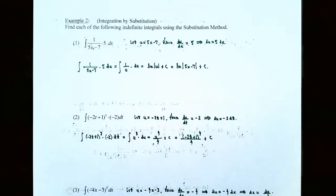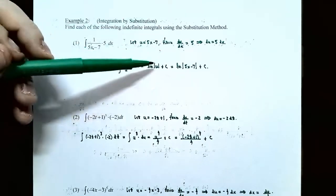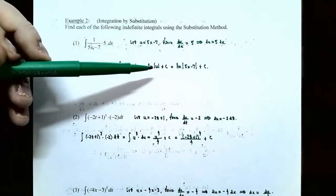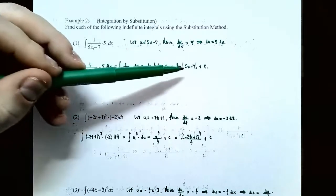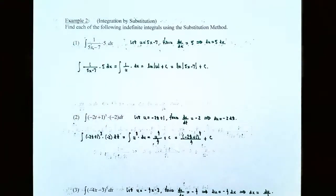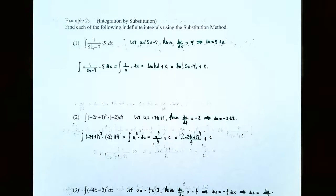What is the family of antiderivatives of 1 divided by u? We know it's natural log of the absolute value of u plus c, using the last theorem. Now the last step: we didn't start with the integral in terms of u — we started in terms of x. So go back and replace u with what the inside function was: 5x minus 7. The family of antiderivatives for this original function is natural log of the absolute value of 5x minus 7, plus c outside the absolute value.